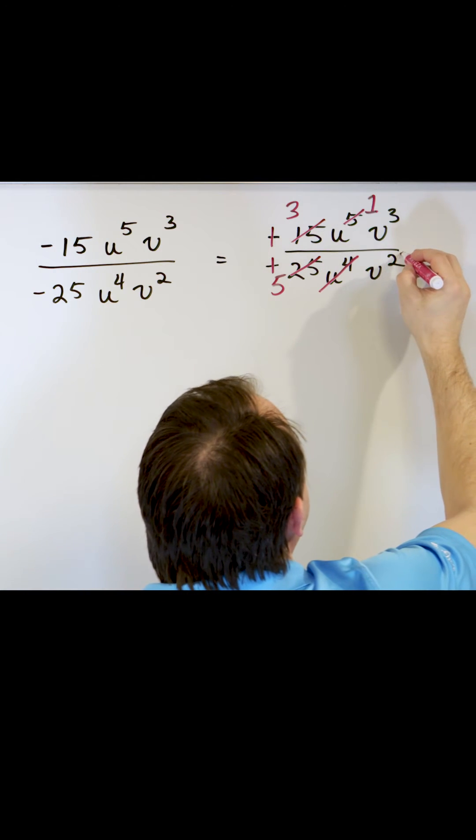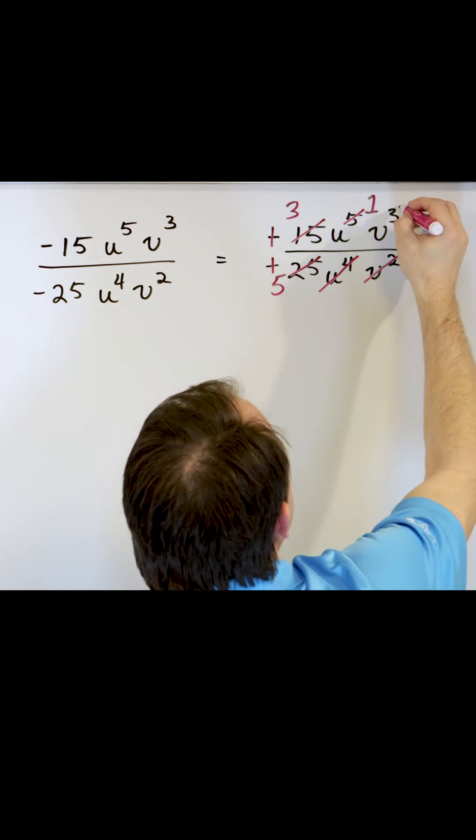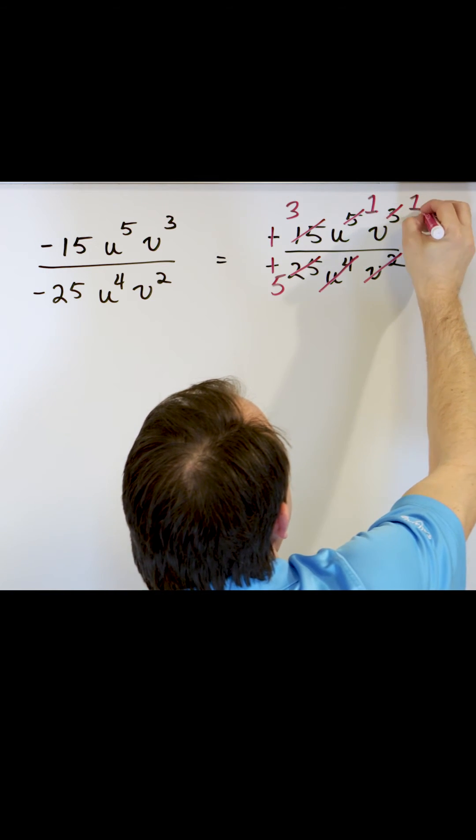Now on this one, I can cancel both of the V's. I strike through the complete thing. Here I strike through only the 3, leaving me a 1 left.